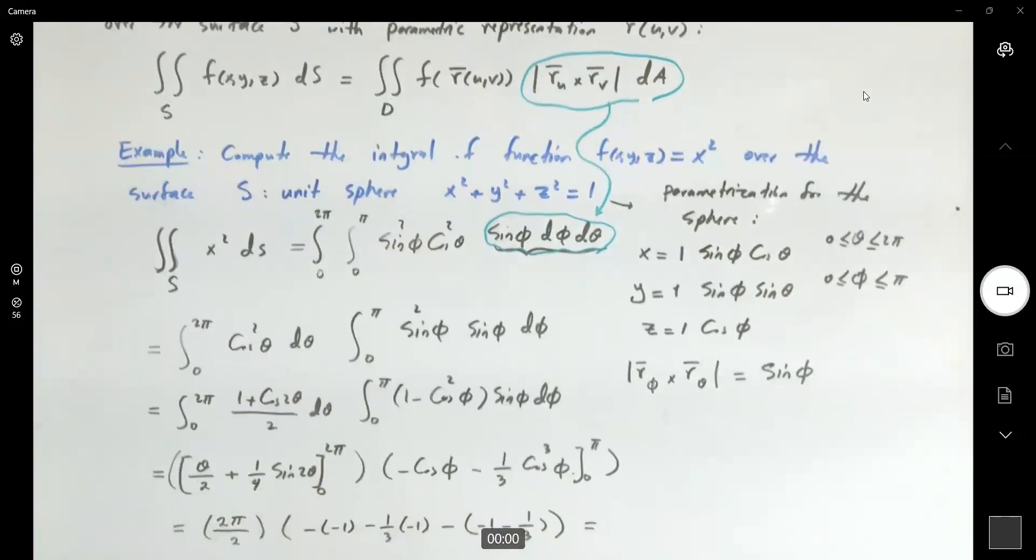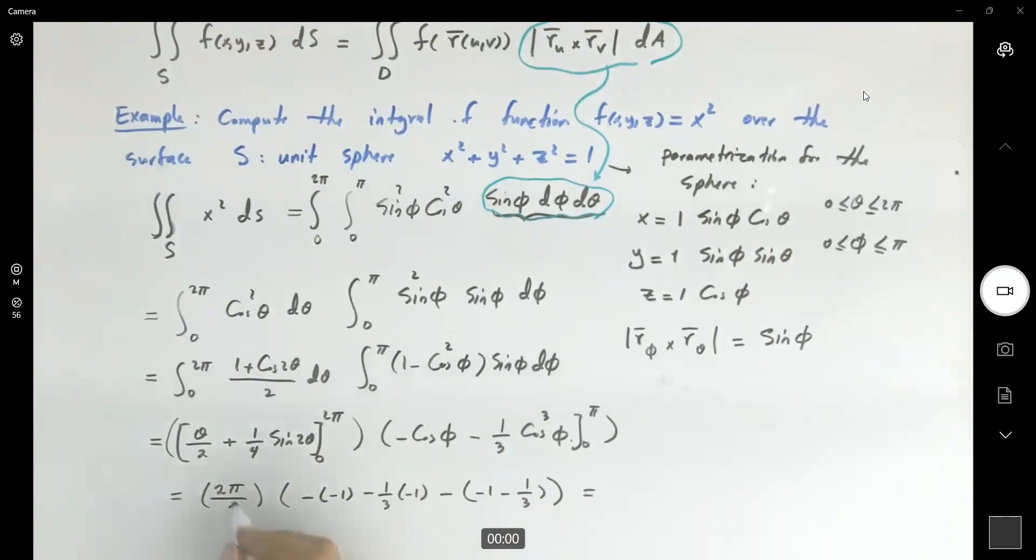So let me move it a little bit up here. You get π and 1 + 1/3 minus, you have plus plus, plus 4/3. So you get 8π/3. Let me see if I make the calculation correct.